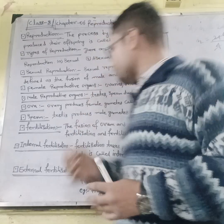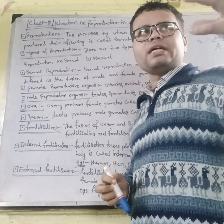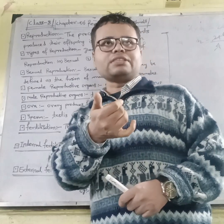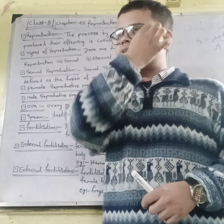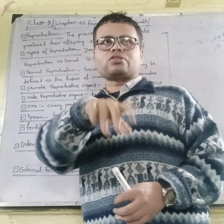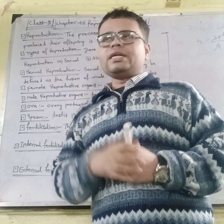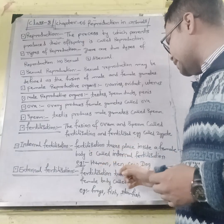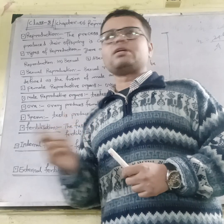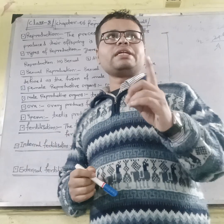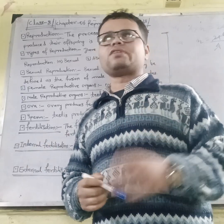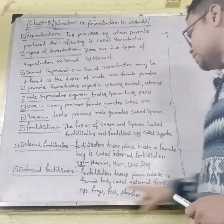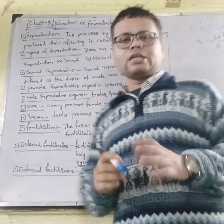What is internal fertilization? Fertilization that takes place inside the female body is called internal fertilization. Examples include humans, hens, cows, and dogs. What is external fertilization? Fertilization that takes place outside the female body is called external fertilization. Examples include frogs, fish, and starfish.